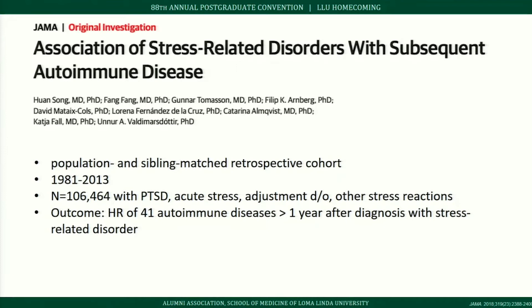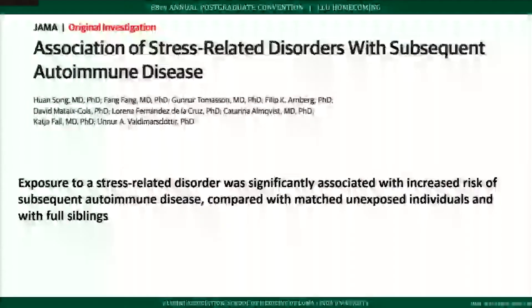A population- and sibling-matched retrospective cohort study of over 100,000 people with a stress-related disorder examined the hazard ratio for 41 autoimmune diseases at least one year after the stress disorder diagnosis. Results showed that patients exposed to a stress-related disorder had a greater risk of a subsequent autoimmune disease compared to matched individuals without such exposure — again supporting the concept of a genetic predisposition tipped over by a trigger.